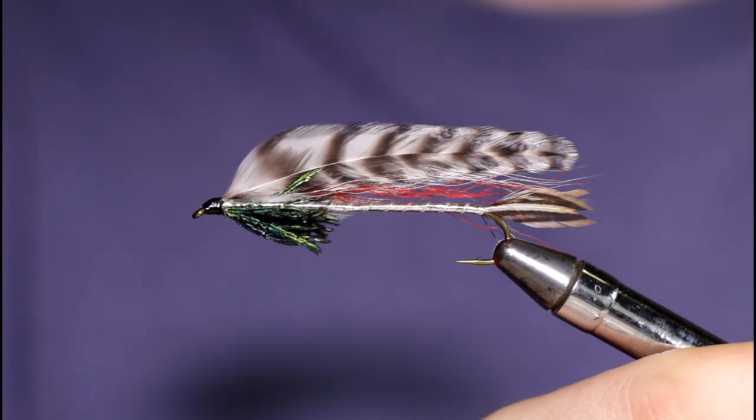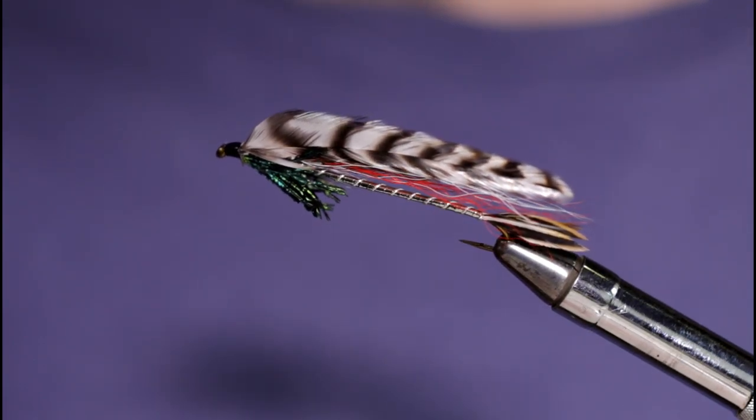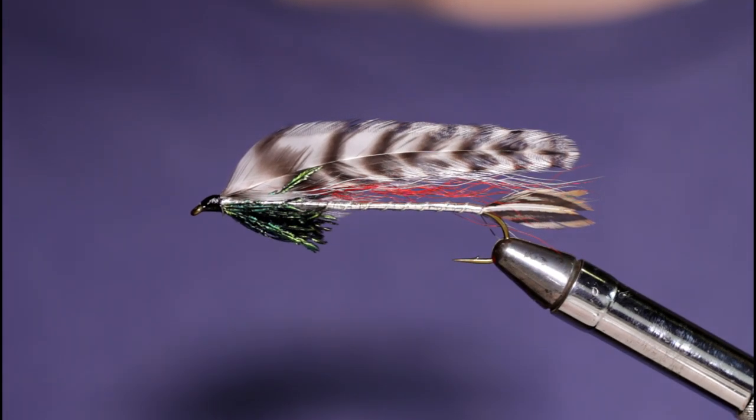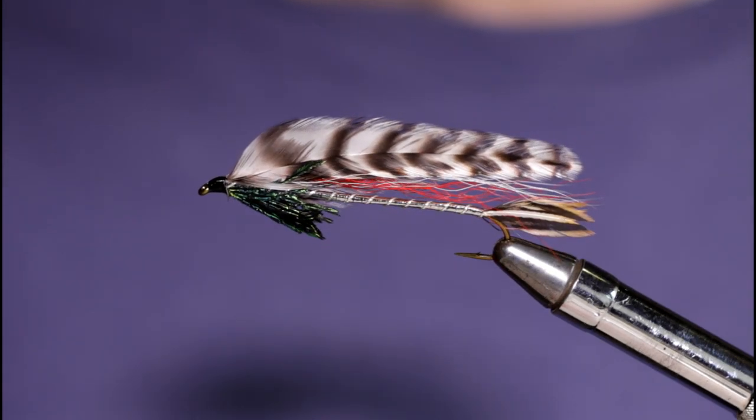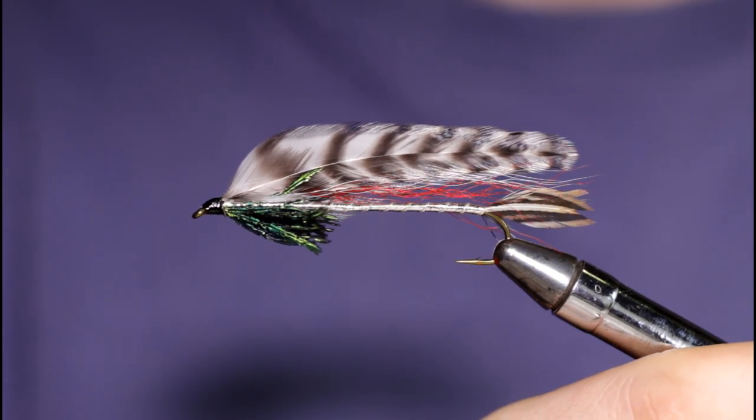This is a little bit overdressed, as I said. I knew I had some webby feathers to work with, so I overdressed it slightly. Tied a little bit more sparse with a thinner wing, and it will probably fish a little bit better. I actually prefer the tandem version of this fly. I'll probably tie that up at some point in the future.